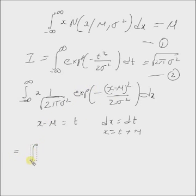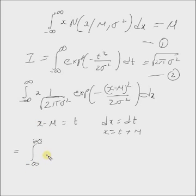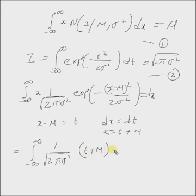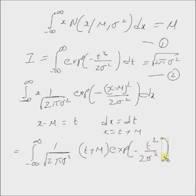Inserting these values into the integral, note that x and t have a linear relationship and the coefficient is positive, so the limits do not change — that is, the limits of t are the same as the limits of x. Hence the integral becomes one over the square root of two pi sigma squared, times (t plus μ), times exponential of minus t squared over two sigma squared dt.